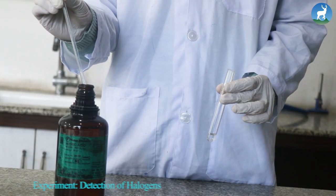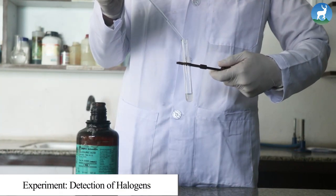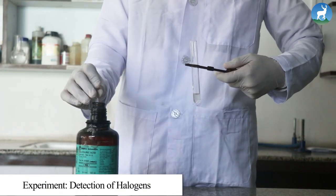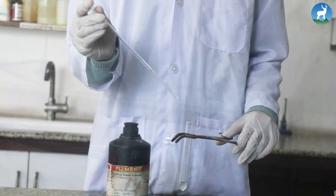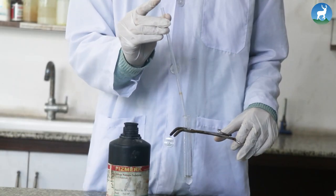Detection of halogens: Add few drops of concentrated HNO3 into 2 ml of sodium extract. Boil it and cool it for a few minutes. Then add 1 to 2 drops of silver nitrate solution.